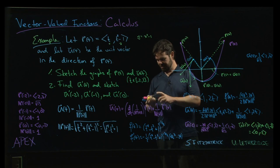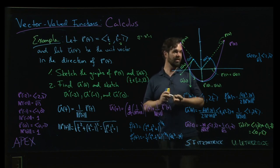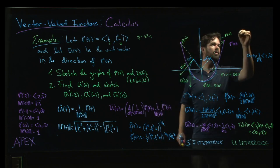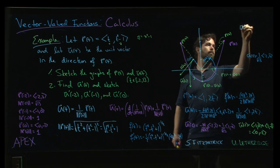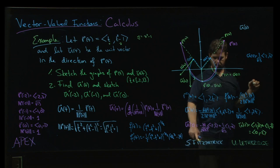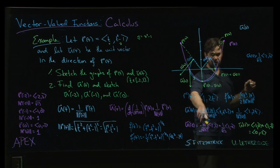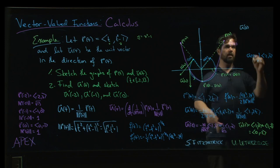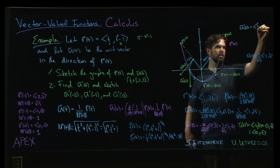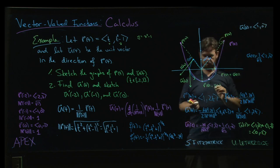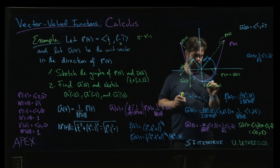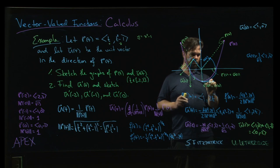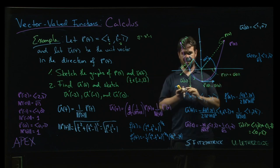Finally, what about u of 0? This example is longer than I thought it was going to be. u prime at 0: this term is going to vanish because this is going to be 0. So this is going to be 1 times <0, 0>. It's just <1, 0>. So it's here. That also makes sense. It's in the direction of travel, tangent to the curve.